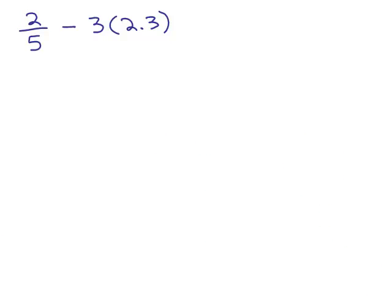All right. Here's the next example. So we're going to do our order of operations again. So we have a fraction 2/5 minus 3 times 2.3. So the first thing we need to do is our multiplication over here. So we're using order of operations. By the way, feel free to put the video on pause and try this on your own first.